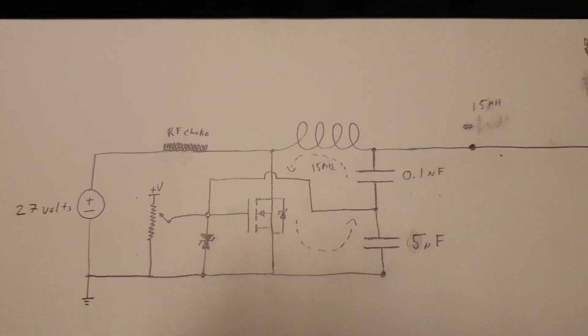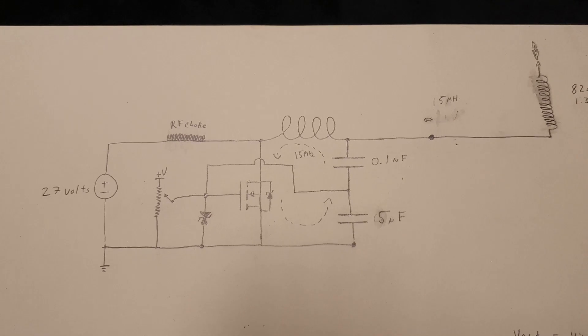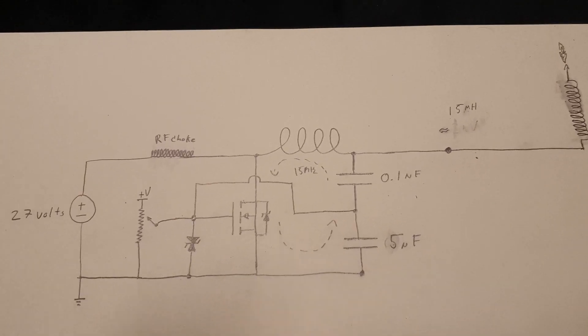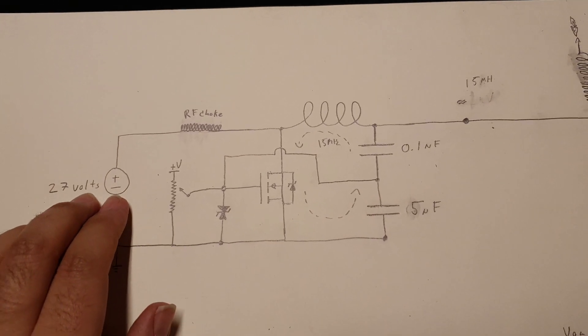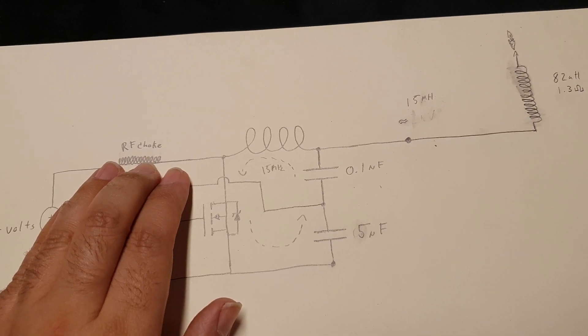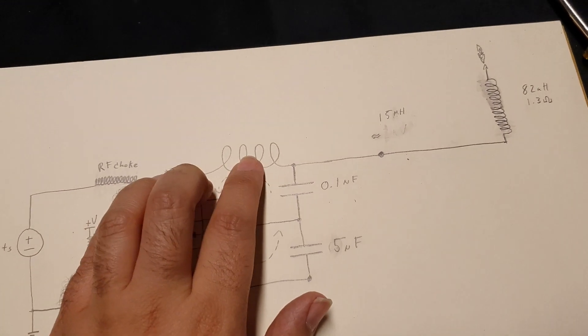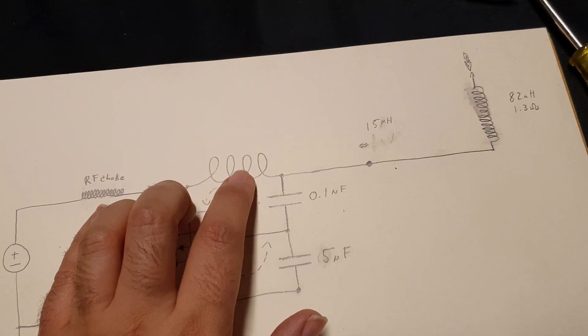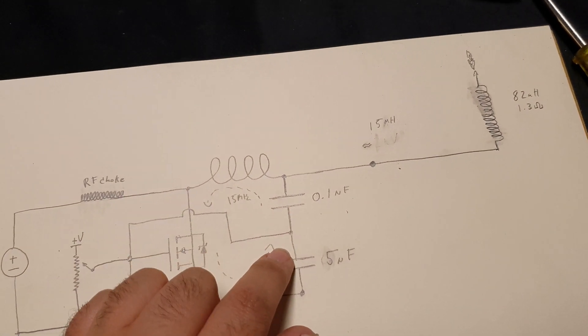And the schematic for our Tesla coil circuit looks roughly like this. We've got our 24 to 27 volt power source. We have the RF choke. DC comes through the choke and current flows through the coils into the capacitors.